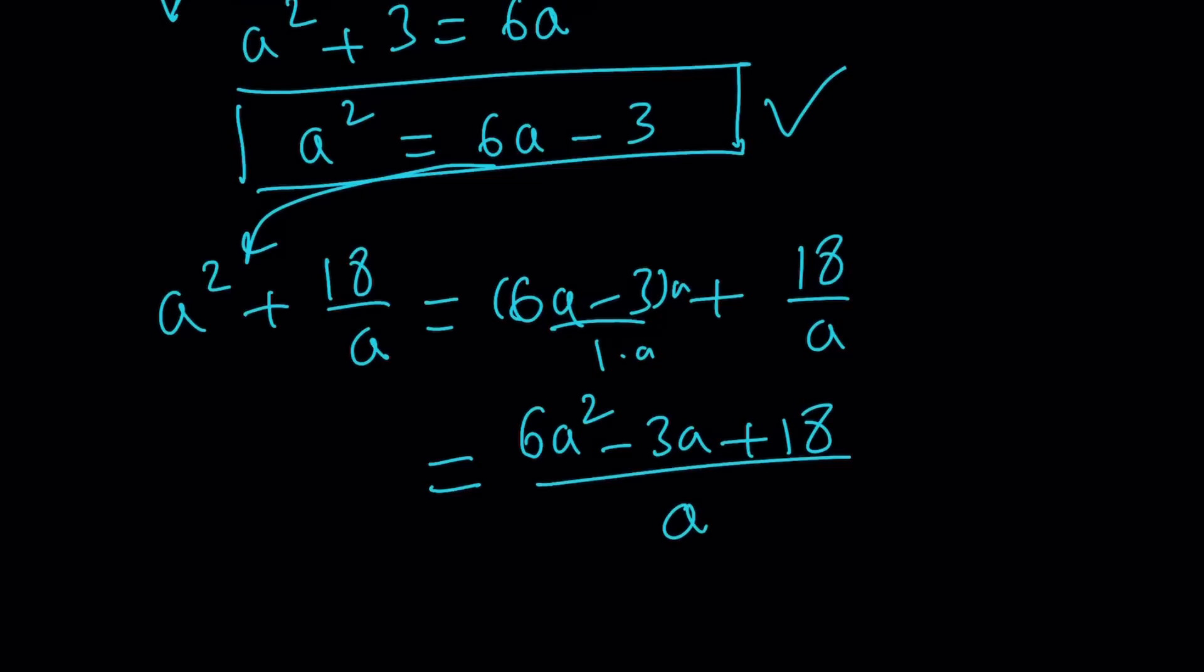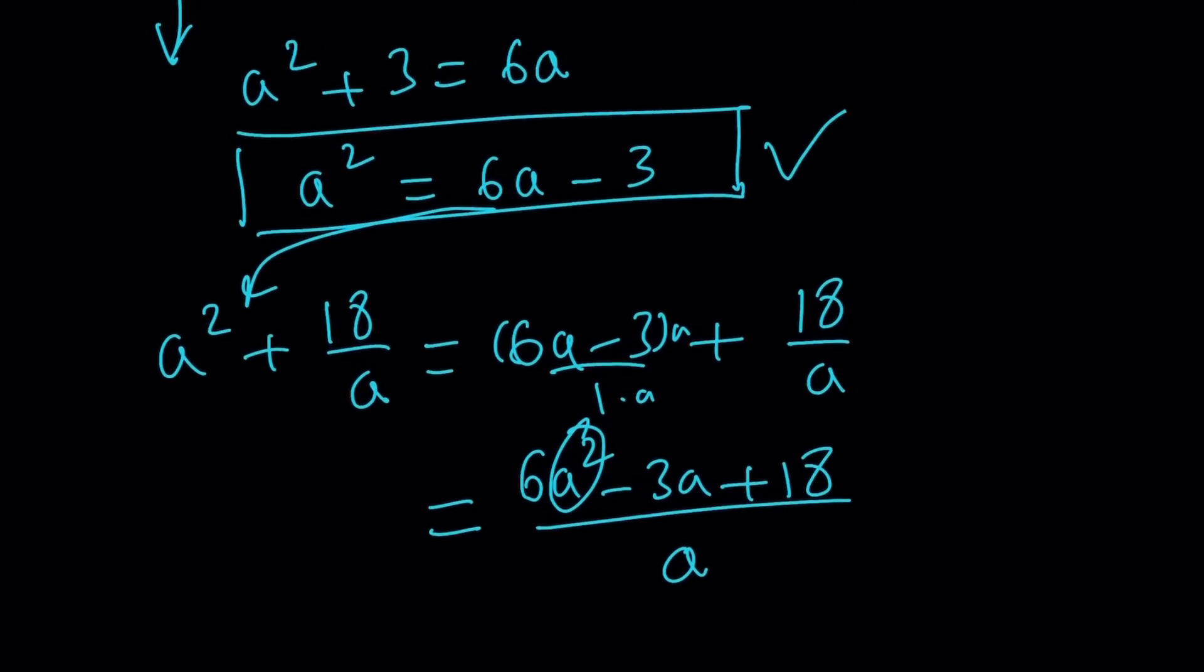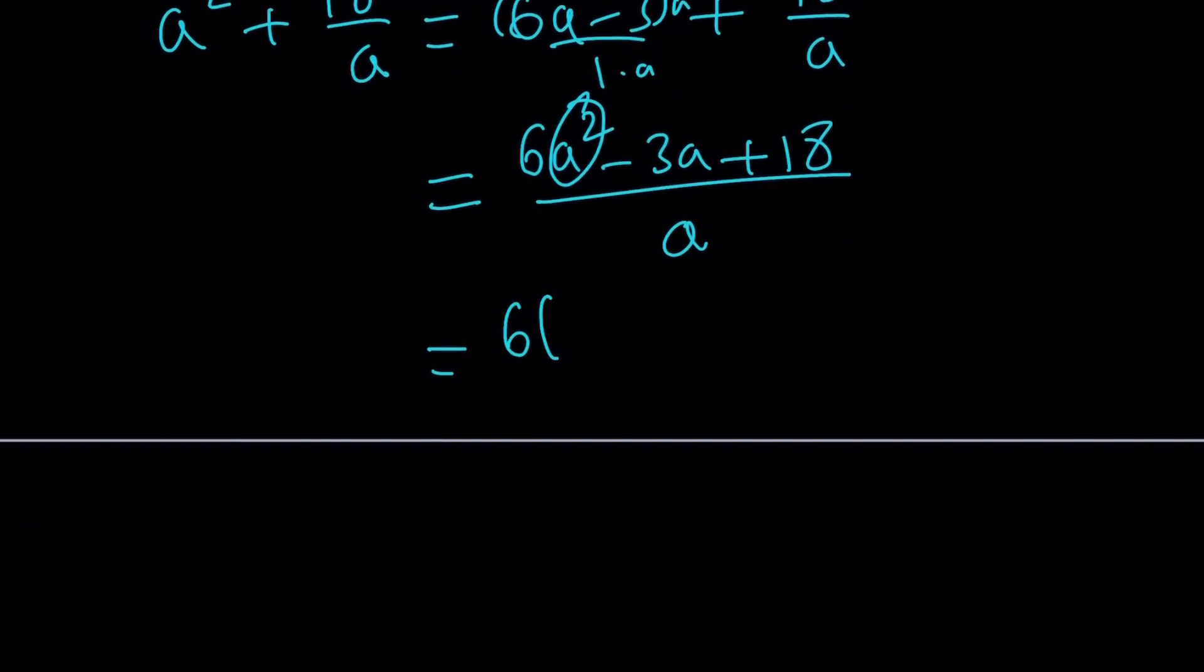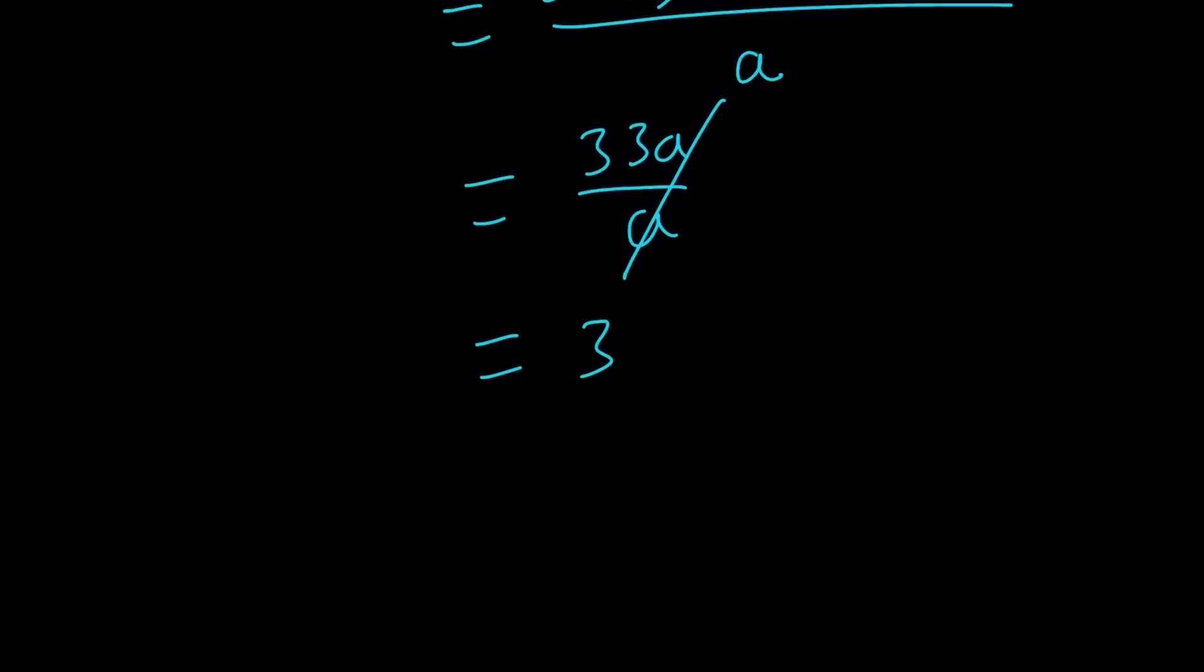So what am I going to do with this? Well, I can replace A squared with something again. What is A squared? I have A squared. So I can replace A squared with 6A minus 3. 6 times 6A minus 3 minus 3A plus 18 divided by A. And then I get 36A minus 18 minus 3A plus 18. This time the numbers cancel out instead of the variables. 18 cancels out, 33A over A. Obviously, A is not 0. And the answer is 33.